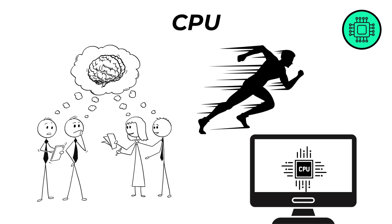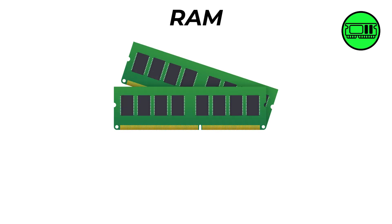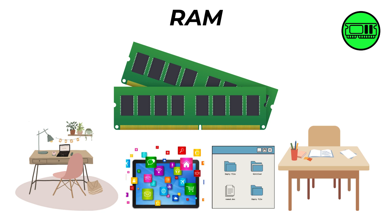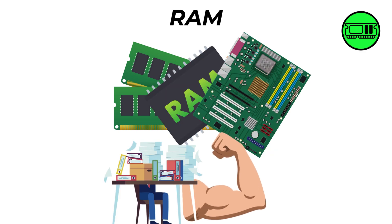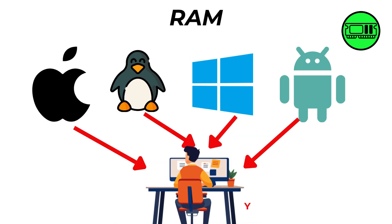RAM is like the computer's workspace or desk. It holds the apps and files you're using right now so the CPU can reach them super quickly. If you have more RAM, it's like having a bigger desk — you can open more things at once without slowing down. But when you shut the computer off, this desk gets cleared.